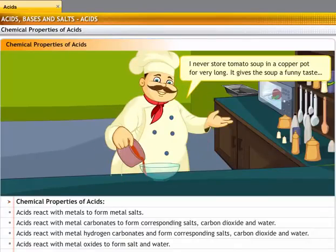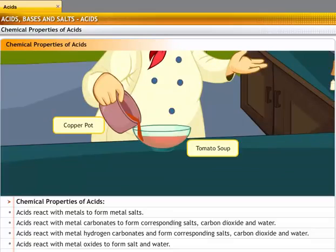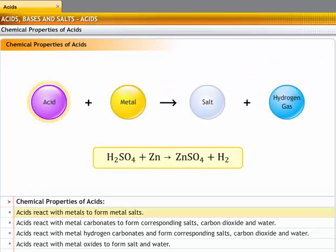I never store tomato soup in a copper pot for very long. It gives the soup a funny taste. Tomato soup being acidic reacts with copper, and that is what causes the change in its taste. Acids react with metals to form metal salts. In this reaction, hydrogen gas is liberated.